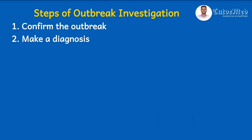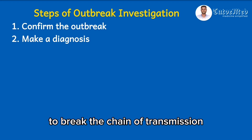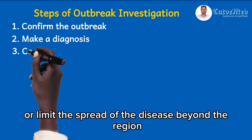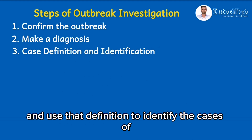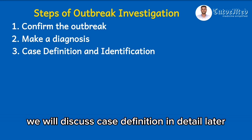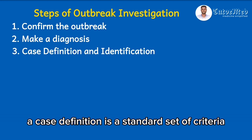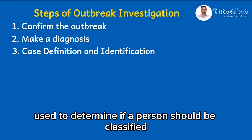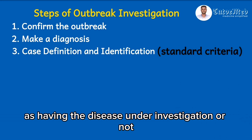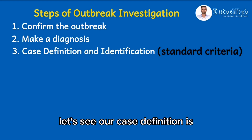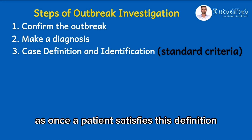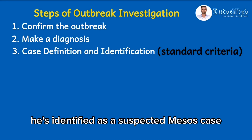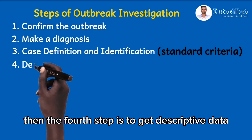Right after confirming the outbreak, immediate control measures have to be instituted to break the chain of transmission and to contain or limit the spread of the disease beyond the region. Then the third step is to generate a case definition and use that definition to identify the cases of the disease outbreak. A case definition is a standard set of criteria used to determine if a person should be classified as having the disease under investigation or not. For measles, let's say our case definition is any individual who has conjunctivitis, cough, coryza, with fever. Once a patient satisfies this definition, he is identified as a suspected measles case.